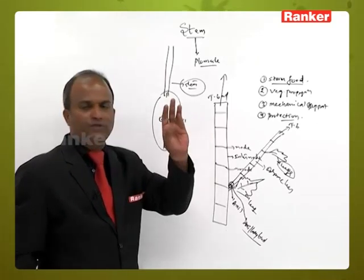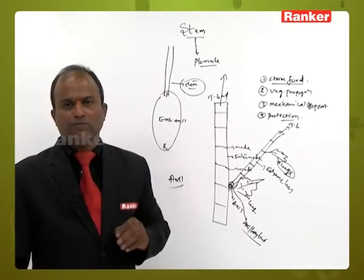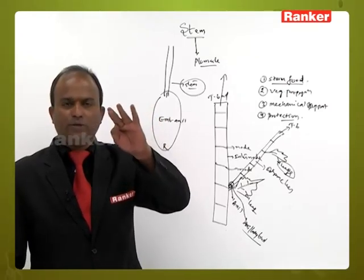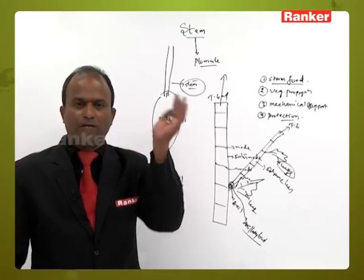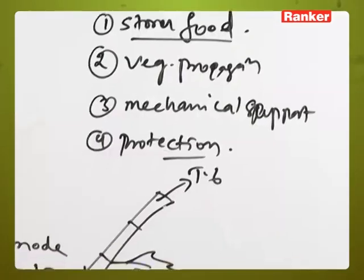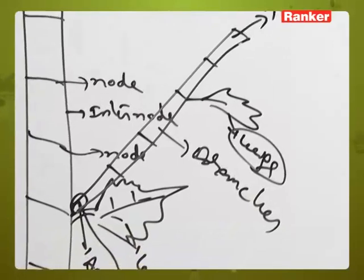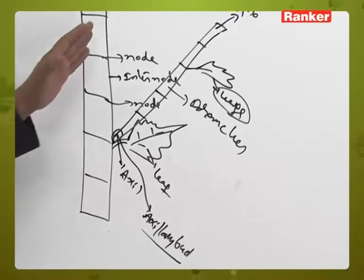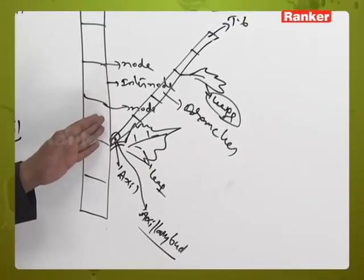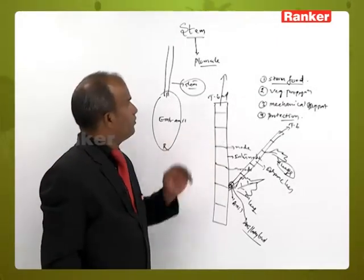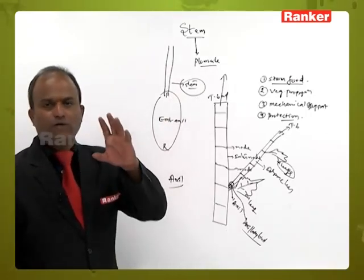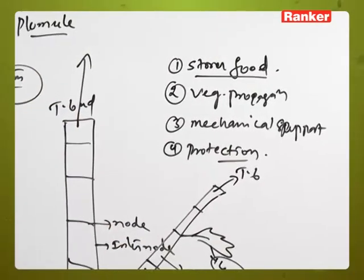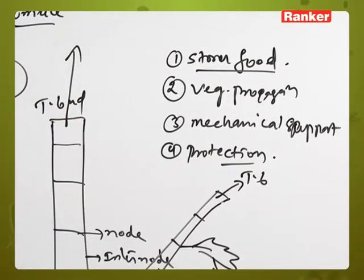The stem exposes leaves, produces branches, produces flowers on both the main stem and branches, and produces fruits on both the branches and stems.